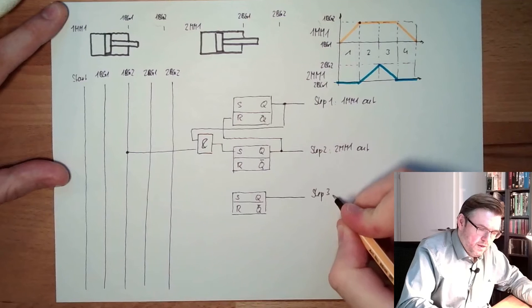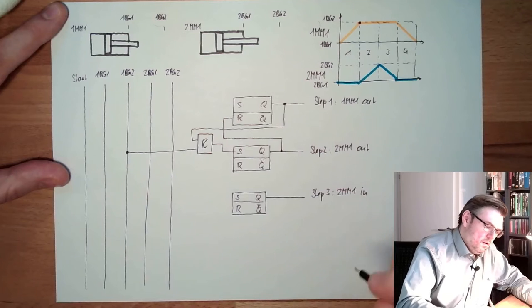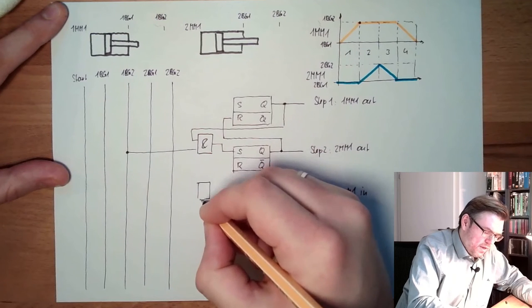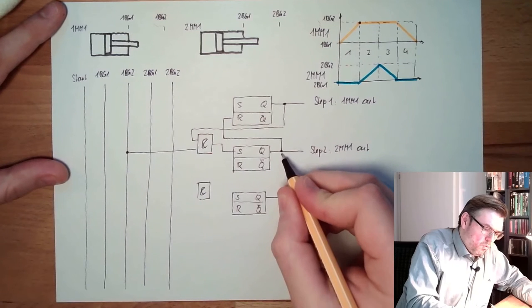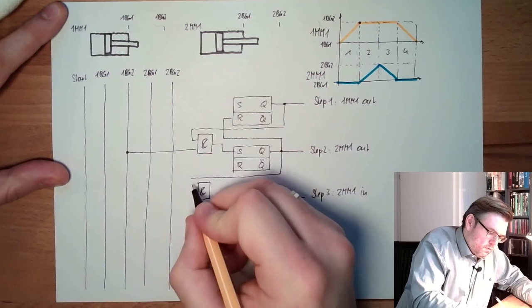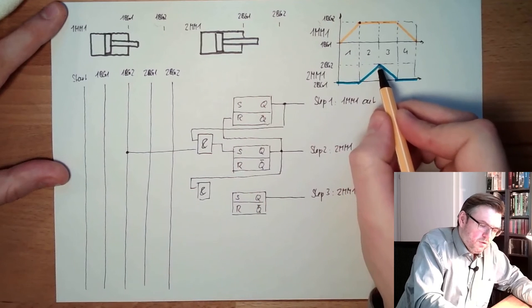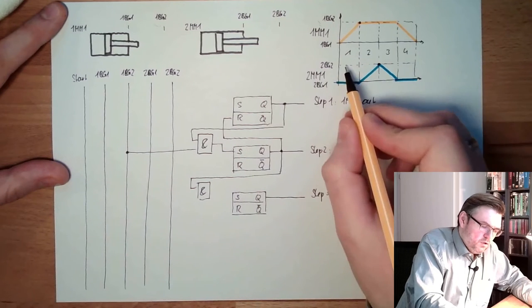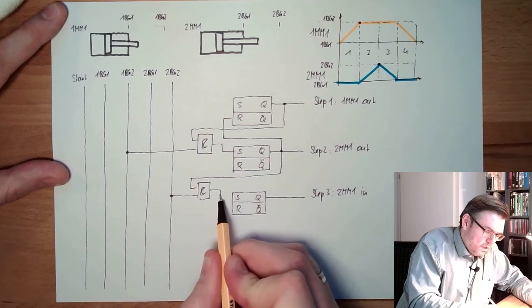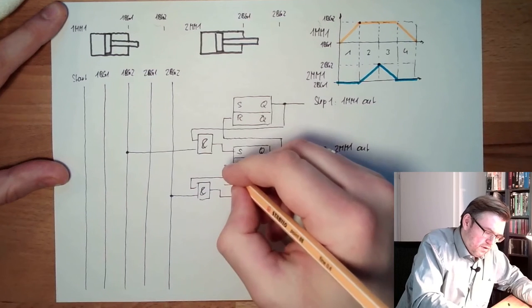Step number two, step three is two MM1 in. When do we have to make the transition? Once we are in step two, and what needs to be fulfilled? Two PG2, because we are at this position, two PG2 needs to be there. Then we set this, and here we make the reset of the previous step.